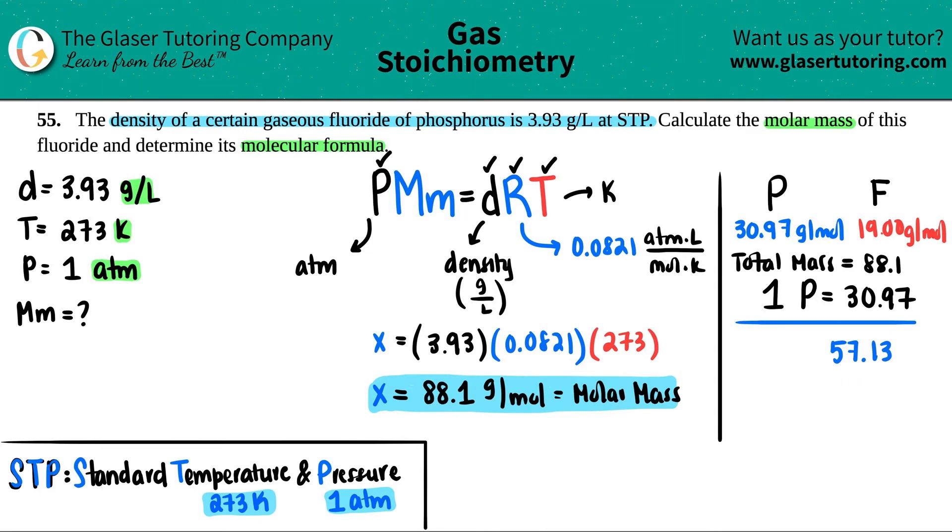So if we have a total mass of 88.1 and we're using up one phosphorus, we have a total left of, let's see, 88.1 minus 30.97. So we have a total of 57.13 left to use. Well, we might say maybe there's another phosphorus, right? I still have room. Another phosphorus costs me like 30.97. I got 57. So let's see, if I did subtract again 30.97, I would get 26 left over, and 26 and 19 don't go nice with each other, right? There's no way that I could take a 19 and turn it into 26. So that means that I don't have more than one phosphorus.